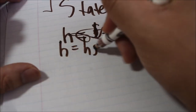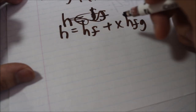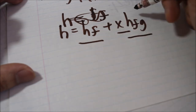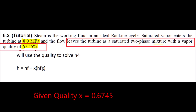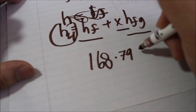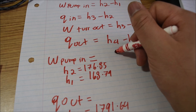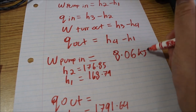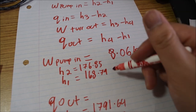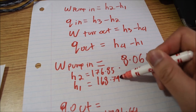At state 4, from the formula, we are given the quality, the saturated enthalpies, and we want to solve for H4. Therefore, H4 equals the enthalpy calculated using the quality. The work pump in is given at 8.06 kilojoules per kilogram; however, if it weren't given, we could solve it with this formula. Therefore, this minus this would equal that.